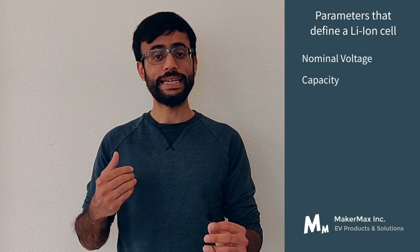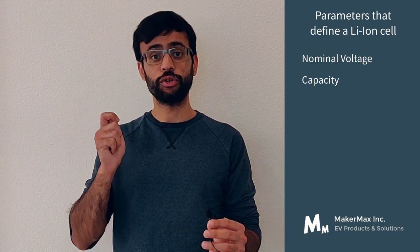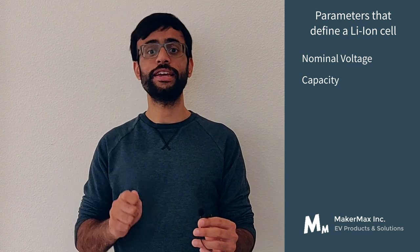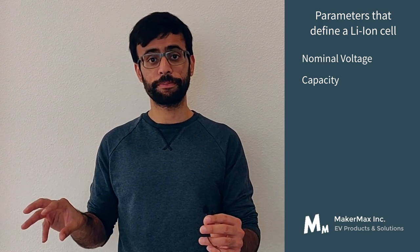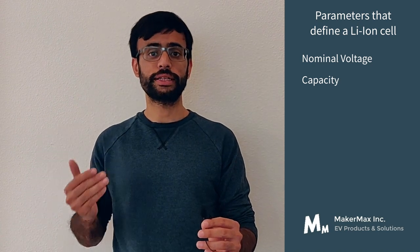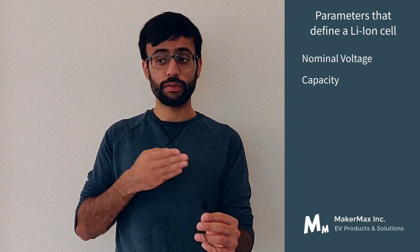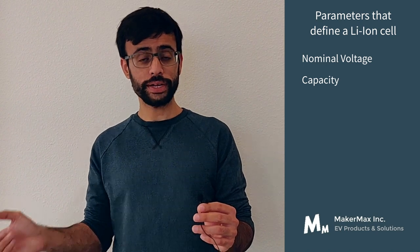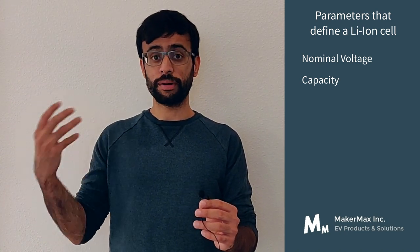The second parameter is the capacity of the cell, which refers to how much charge can be stored inside the cell when it's fully charged. Capacity is measured in ampere-hours (Ah). Ampere-hours is a multiplication of amps and hours. For example, a cell with 2Ah capacity means you can discharge it at 2A for 1 hour, or 1A for 2 hours, or 0.5A for 4 hours — the product of amps and hours gives the charge stored.